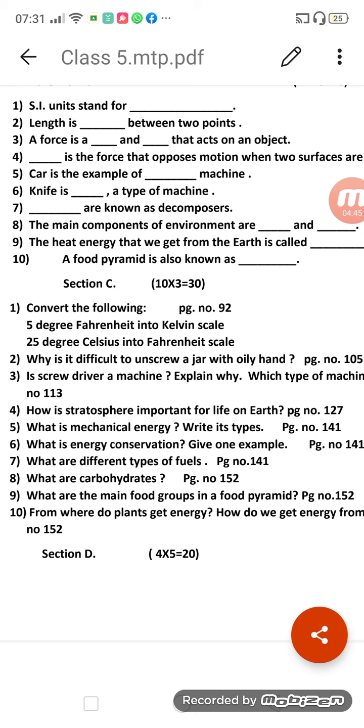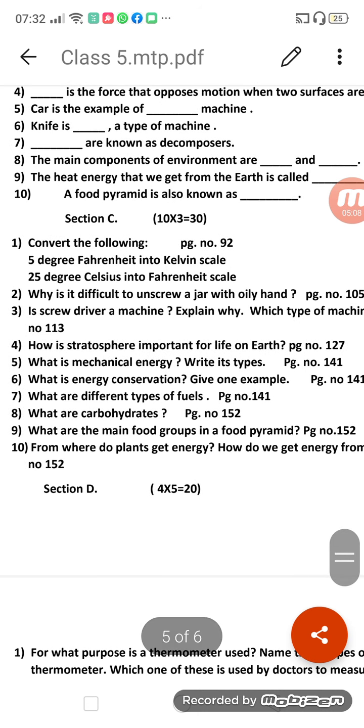How is stratosphere important for life on earth? Three points you have to write down. What is mechanical energy? Write its type. First you have to write down the definition of mechanical energy, then you have to write down how many kinds of mechanical energy are there - types, how many types of mechanical energy are there. Then question number six: What is energy conservation? Give one example. First you have to write down the definition of energy conservation and then you have to write down one example.